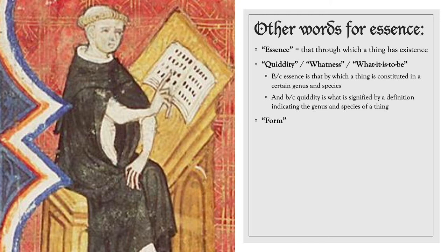The word 'form' can also, in some cases though not in all cases, signify the same thing as essence. That's because by an essence, a thing has a certain stability or changelessness. What a thing is must be the same over time for the thing to remain in existence. For instance, what a dog is is the same a hundred years ago, three thousand years ago, and today.